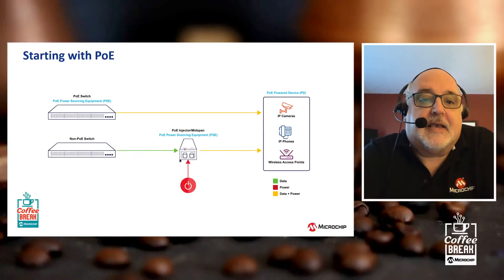Before we dive into the outdoor portion and the advanced features portion, let's back up and just talk about basic Power over Ethernet. What does it provide and what is it good for? In setting up a network, you have an Ethernet switch that provides data to an endpoint device, and what Power over Ethernet means is you can provide not only data but also power on that same endpoint device from the switch.